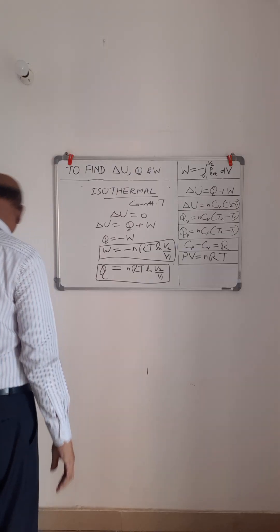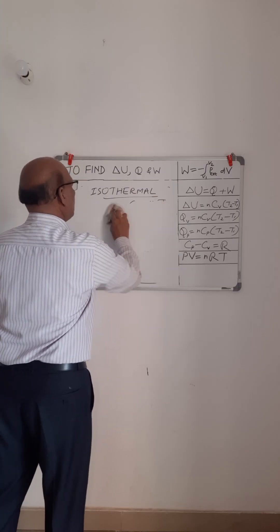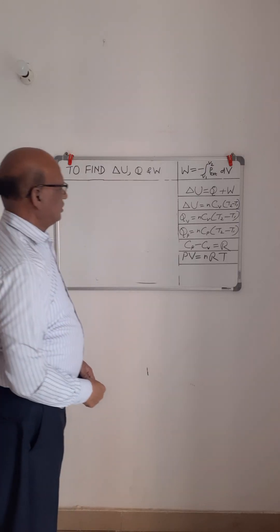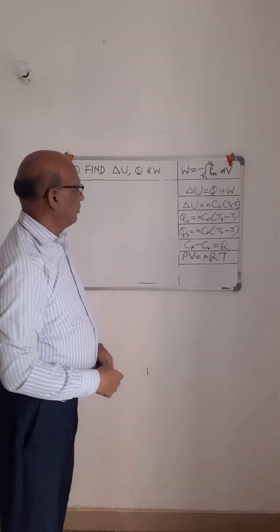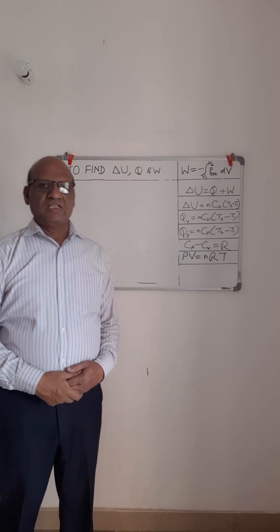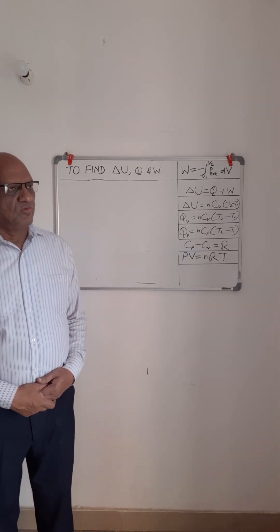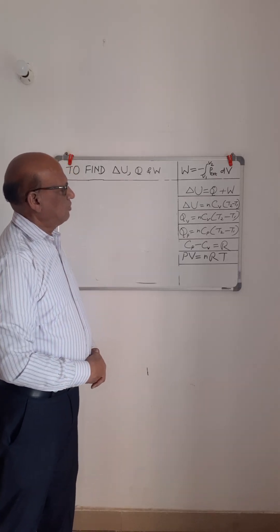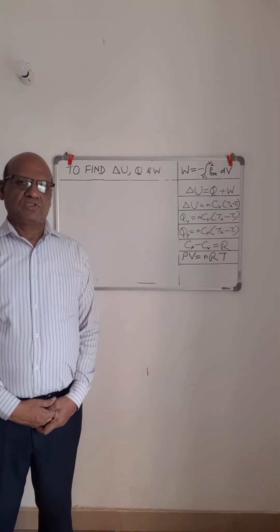So we have found out the formulas for all four processes — isothermal, adiabatic, isobaric, and isochoric — utilizing the key equations valid for all processes. With this, I conclude the session. I wish you all the best.